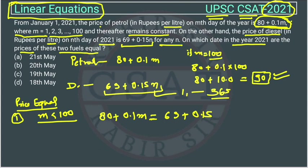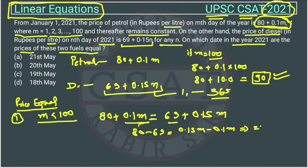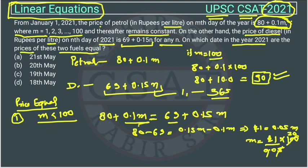Since m equals n, we can replace n with m and solve the equation. This becomes 80 minus 69 equals 0.15m minus 0.1m, which gives 11 equals 0.05m. So m equals 11 divided by 0.05, which is 220. But we already assumed that m is less than 100, and m cannot be 220. So this case is wrong — it means the prices become equal on a day which is more than 100.